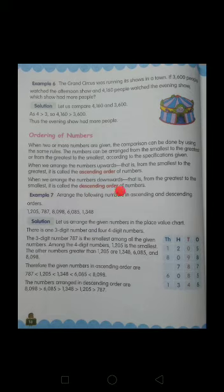What is ascending order? Arranging the numbers from the smallest to greatest is ascending order. And descending order is arranging the numbers from the greatest to smallest.